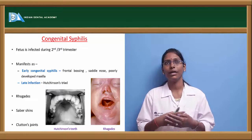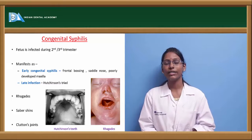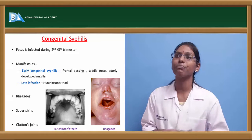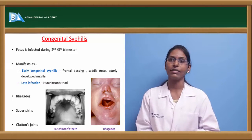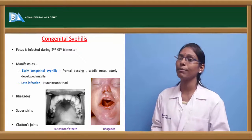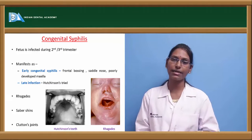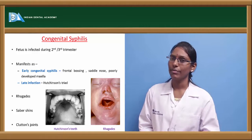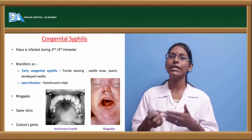Congenital syphilis results from vertical transmission — a mother infected with syphilis passing the infection to her child. Manifestations occur at less than two years of age, with the fetus infected during the second or third trimester. It presents as early or late congenital syphilis. Early features include frontal bossing, saddle nose (depressed nasal bridge), and poorly developed maxilla. Late congenital syphilis has the pathognomonic Hutchinson's triad: mulberry molars, screw-shaped incisors, interstitial keratitis, and deafness. Patients may also have arthritis, rhagades (vertical lines from corners of lips), sabre shins, and Clutton's joints.